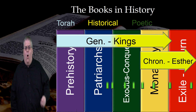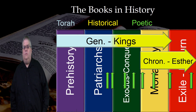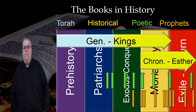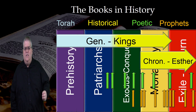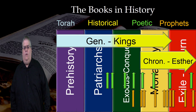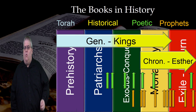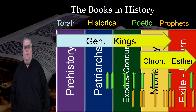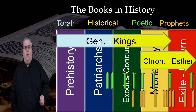The poetic books and the prophets each have books distributed in different places throughout the historical epics, and a few of them don't have precise dating. But the prophets are mostly clustered around a few crisis points in Israel's history.